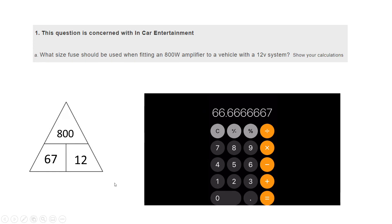But obviously if the fuse that we used was a 67 amp fuse, whenever we switched it on, it would use 67 amps and would blow the fuse. So we need to allow a working tolerance.